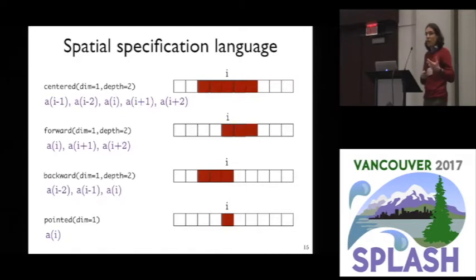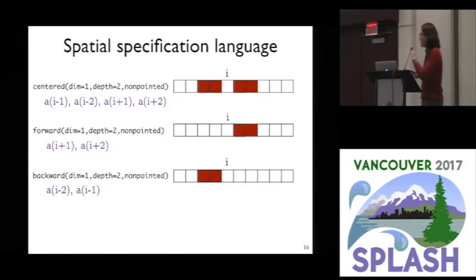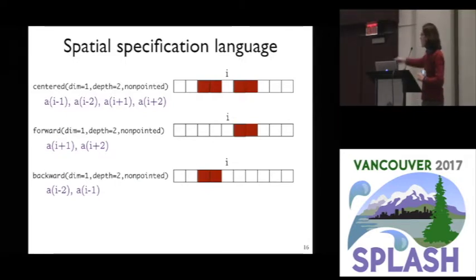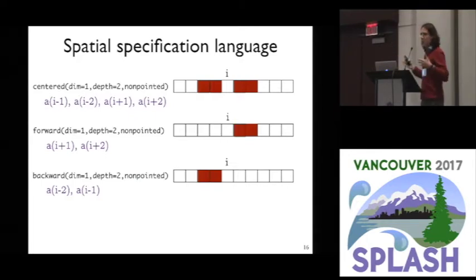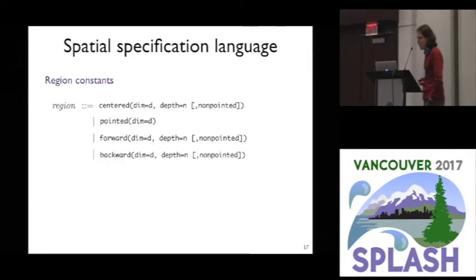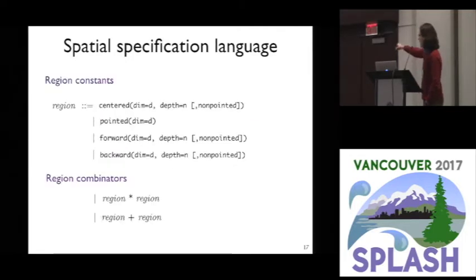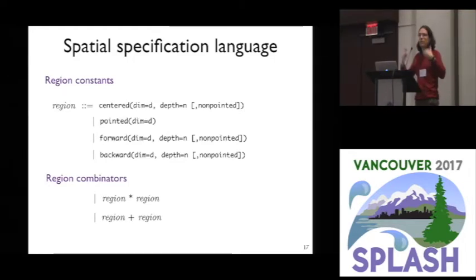From our data, we noticed that sometimes the origin point was missing — you're straddling the origin but not including it. So we have a modifier called 'not pointed' which drops that out. These describe sets of array accesses happening in a computation. There are four constants and two combinators — multiply and plus — for combining region descriptions.